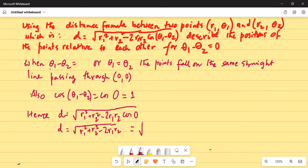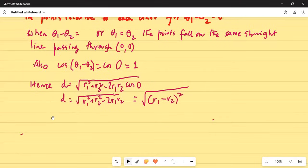That becomes equal to square root of, this is nothing but r1 minus r2 squared. So if I create some space, I can write d equals absolute value of r1 minus r2, because it was squared under the square root. When we take it outside the square root it becomes absolute value of r1 minus r2.